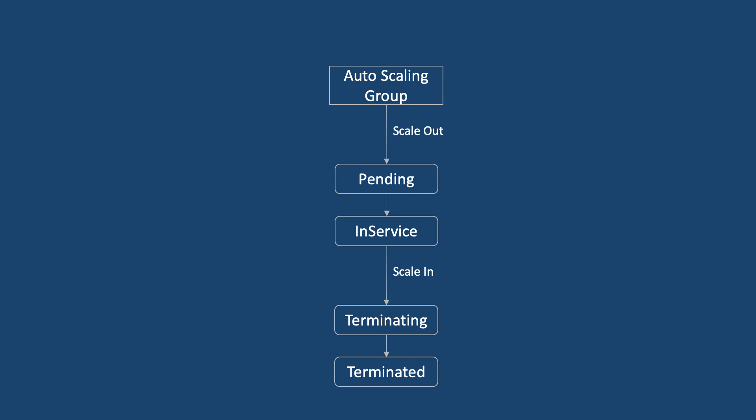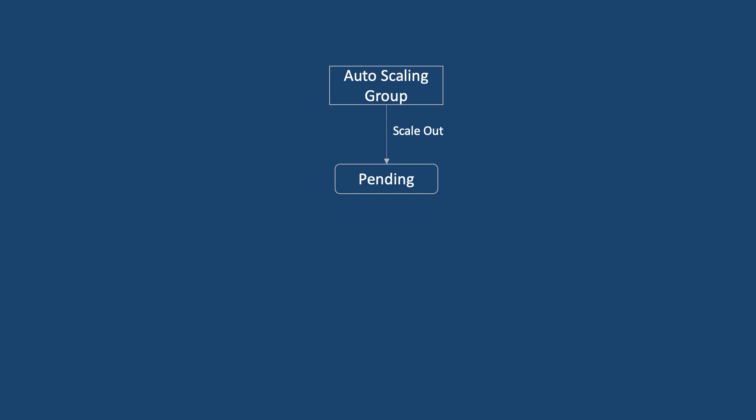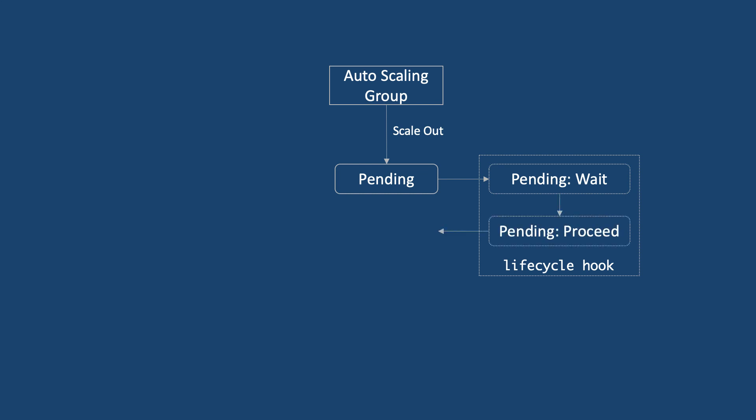Now let's understand this with lifecycle hooks enabled. A scale out activity happens, the instance will first enter the pending state. At this point, the lifecycle hook will intercept the instance and put it into a pending wait state. You can take your custom actions — that could be installing software or updating some packages. When the work is completed, you need to instruct the EC2 instance to proceed, and at that moment it will move to in-service.